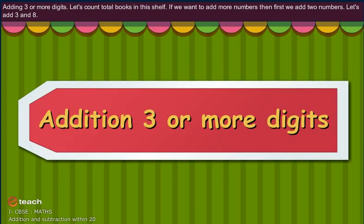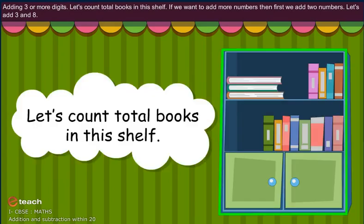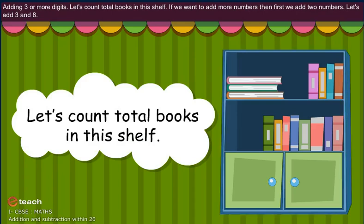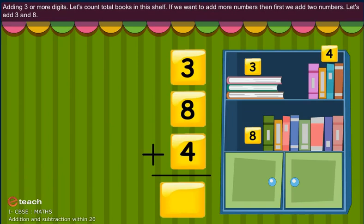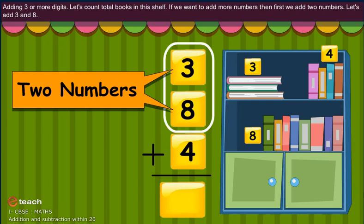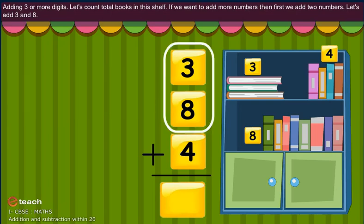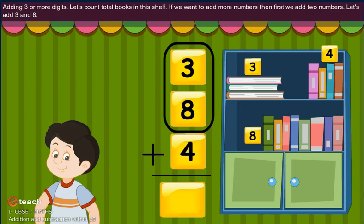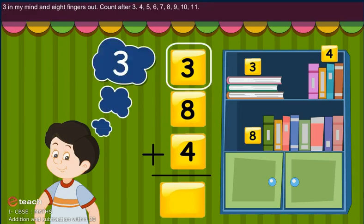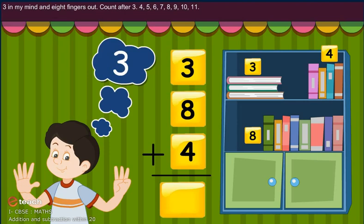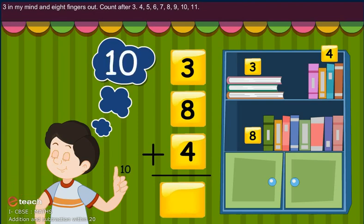Adding 3 or more digits. Let's count total books in this shelf. If we want to add more numbers, then first we add two numbers. Let's add 3 and 8. 3 in my mind and 8 fingers out. Count after 3: 4, 5, 6, 7, 8, 9, 10, 11.